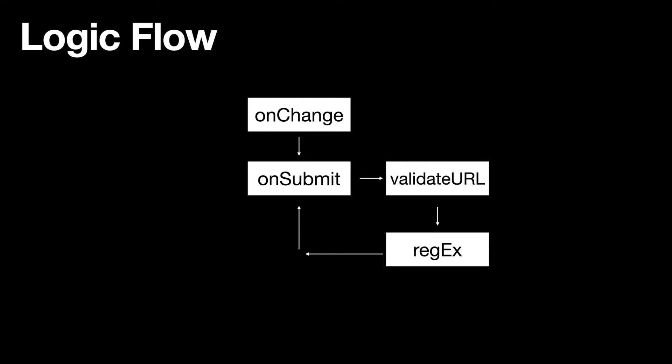The logic flow for this app: through the onChange event we'll be capturing the URL or anything typed in the input box. After hitting submit, there's a validateUrl function that will check the URL captured through onChange. It will compare it with the regex pattern to match it. Once it returns true or false, it goes back into onSubmit, where we check whether it's true and then set a flag to true. Based on that flag we output whether it is valid or invalid.